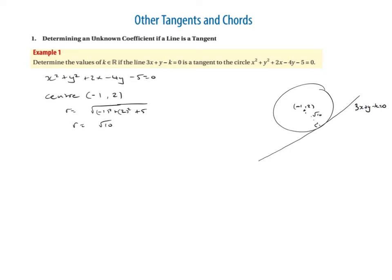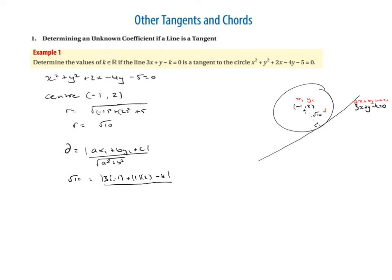All we're going to do is stick it into the formula. The formula is d = |ax₁ + by₁ + c| / √(a² + b²). I'll quickly label everything: (x₁, y₁) is the center, d is the radius, and ax + by + c = 0 is the tangent line 3x + y - k = 0.